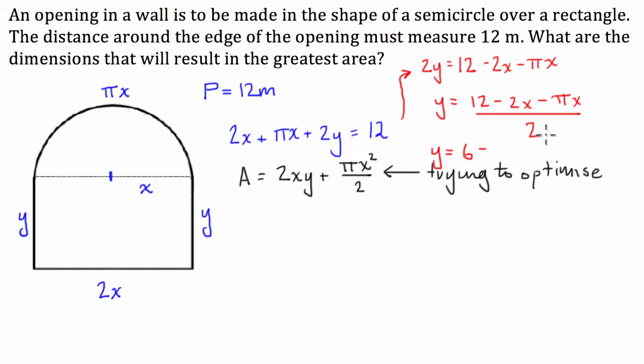we've got 2 divided by 2, which is just 1, and we've got half of pi. So when we combine the two x terms together, and then divide them by 2, we're going to get 6 minus 2.5708x.